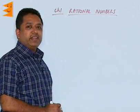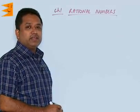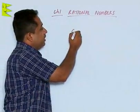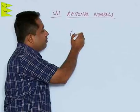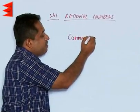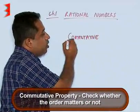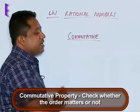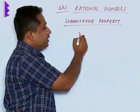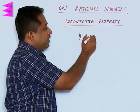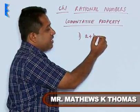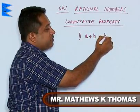Now, let us understand the next property, that is the commutative property. In the commutative property, unlike the closure property, we have to check whether the order matters or not. The commutative property for addition is to check whether A plus B is the same as B plus A or not.